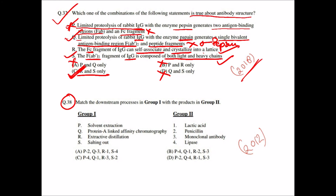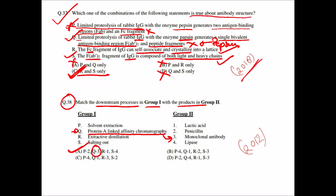An additional question asks to match downstream processes with products. Protein A-linked affinity chromatography matches with recovery of monoclonal antibodies. This illustrates that with limited data you can answer questions in GATE. Keep all information in mind because data from one topic can help answer questions on another. That's all for today — comment any difficulties below and see you in the next video.